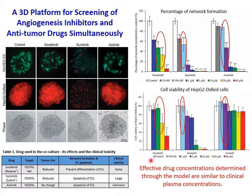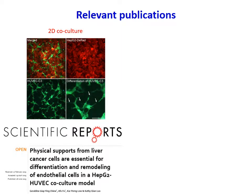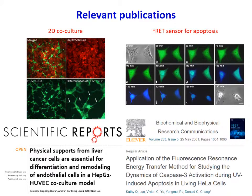Furthermore, the effective drug concentrations determined through the model are similar to clinical plasma concentrations used. Here are some relevant publications related to our paper. We have the 2D co-culture that was established before the 3D model and shows the interplay between liver cancer cells and endothelial cells. And if you are interested in the FRET sensor for apoptosis, you can take a look at the paper on the right.